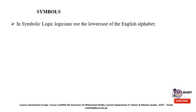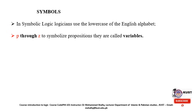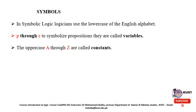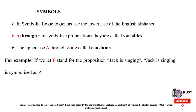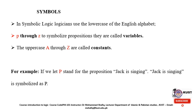Now let's move to the symbols. In symbolic logic, logicians use the lowercase English alphabet P through Z to symbolize propositions — these are called variables. The uppercase A through Z are called constants. For example, if we let P stand for the proposition 'Jack is singing,' then 'Jack is singing' is symbolized as P.